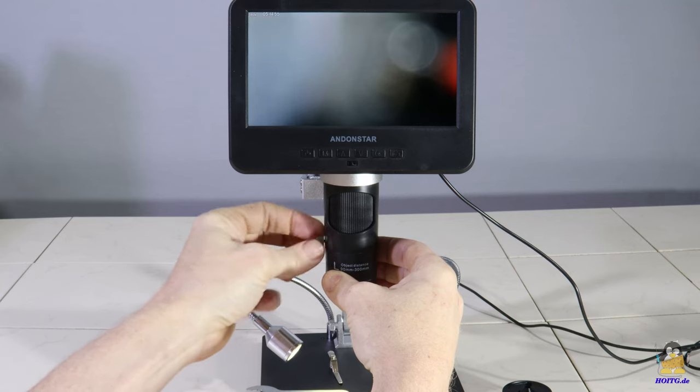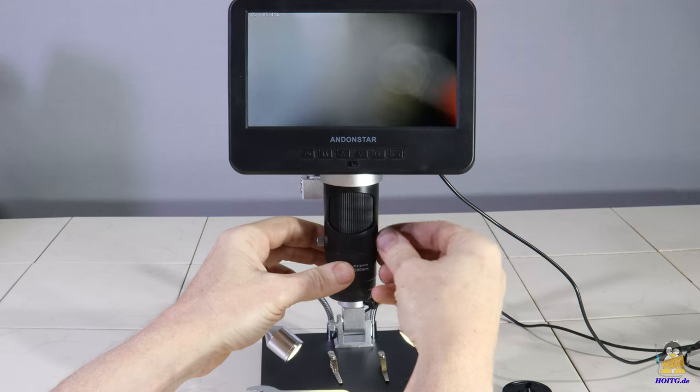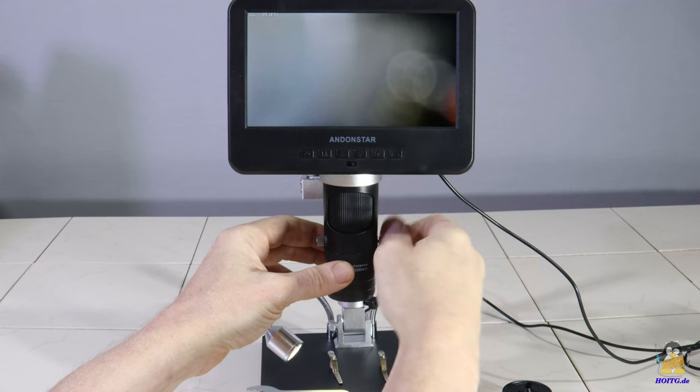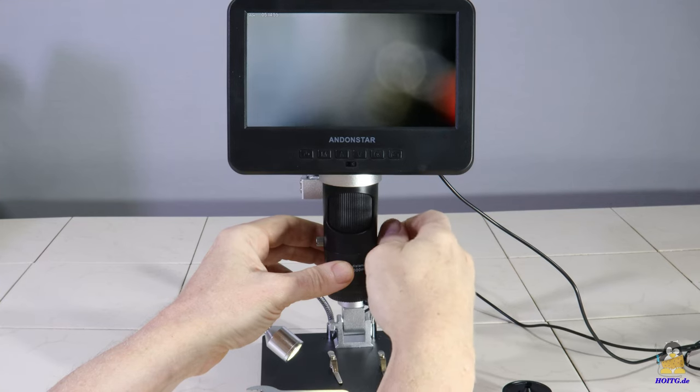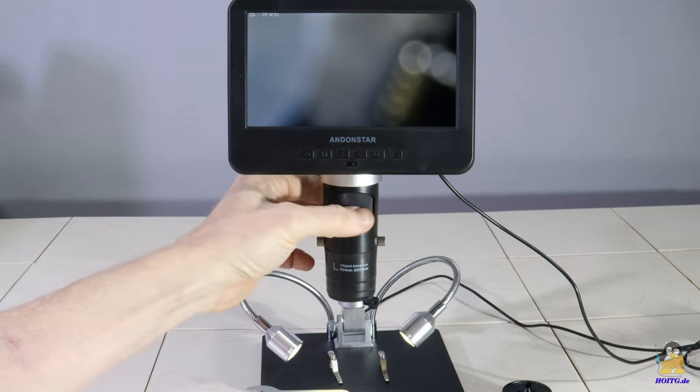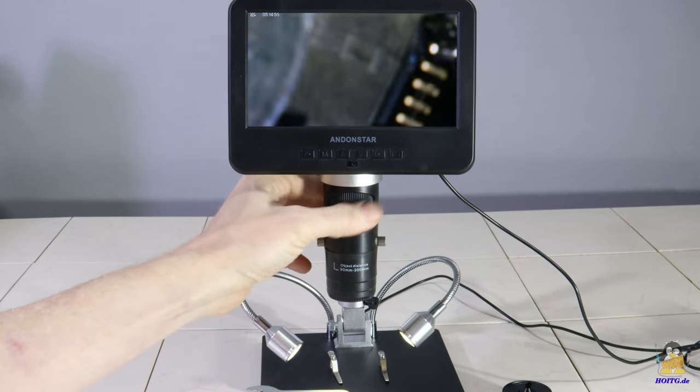This lens is suitable for an object distance of 90 to 300mm. Compared to the first lens, there is a larger magnification with the same object distance.